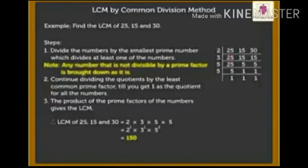Let us find the LCM of 25, 15 and 30. Here we will be finding the prime factors of all the numbers together. Step 1: Divide the numbers by the smallest prime number which divides at least one of the numbers. Begin with the smallest prime number that is 2.